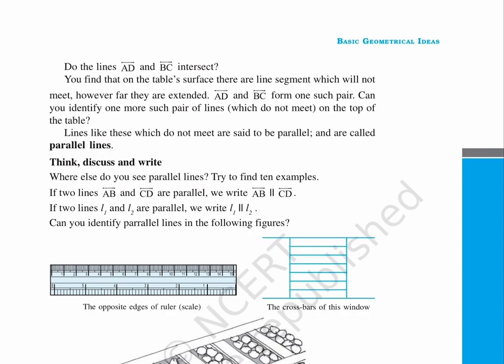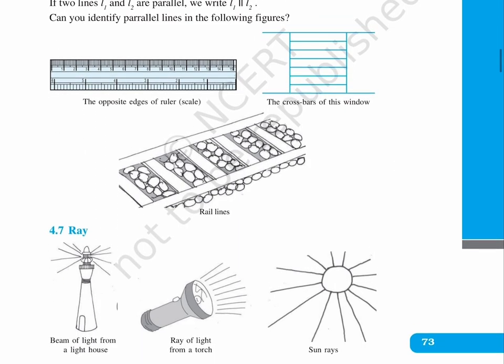There are three figures given here. The first one is of a ruler showing the opposite edges of ruler or scale. The second figure represents the cross bars of this window. The third figure shows railway lines.